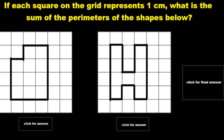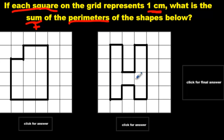Now it's your turn — I think you can do it! Let's underline the key information. If each square on the grid represents one centimeter, so all these squares are one centimeter wide, what is the sum — sum means plus — of the perimeters of the shapes below? So what it's asking us to do is get the perimeter of this shape, then get the perimeter of that shape, and then find the sum of the perimeters.